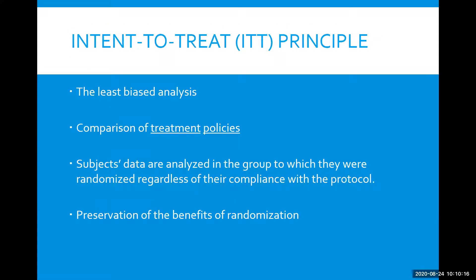The least biased analysis that can be done is an intent-to-treat analysis. An intent-to-treat analysis follows the intent-to-treat principle, which is a comparison of treatment policies — subjects' data are analyzed in the group to which they are randomized, regardless of whether they comply with the protocol or actually receive the study drug to which they were allocated. This preserves the benefits of randomization, because if you analyze patients in a group different to which they were randomized, you're essentially undoing randomization.